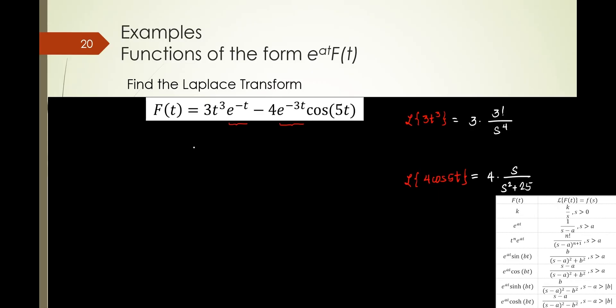All right. But in here, guys, you notice that it shifted because it has an e to the negative t. So that means this one would be 3 times 3 factorial. And instead of s to the 4, what will it be, guys? S minus a. What is the a?